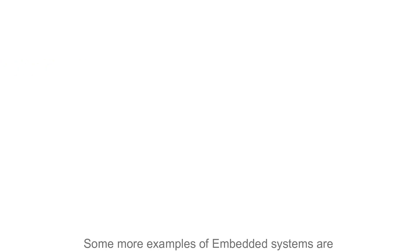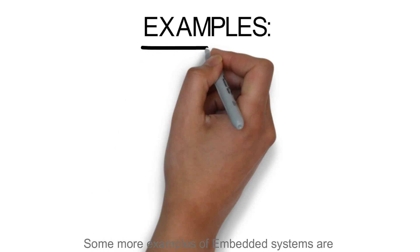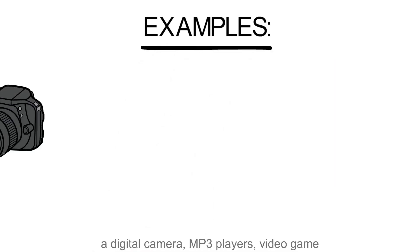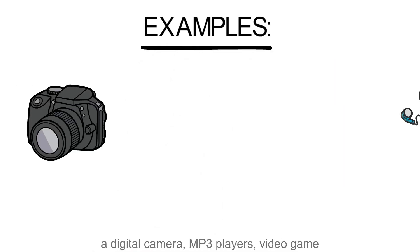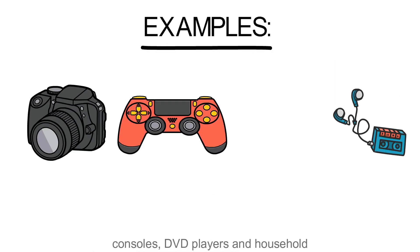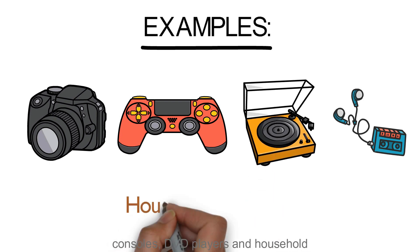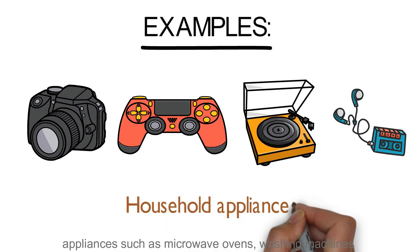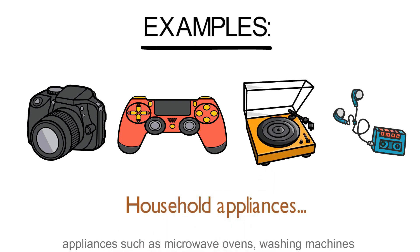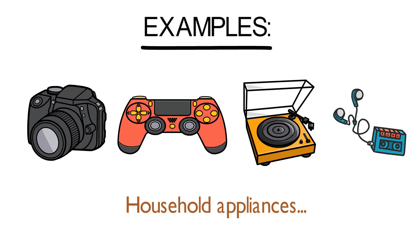Some more examples of embedded systems are a digital camera, MP3 players, video game consoles, DVD players and household appliances such as microwave ovens, washing machines and dishwashers.